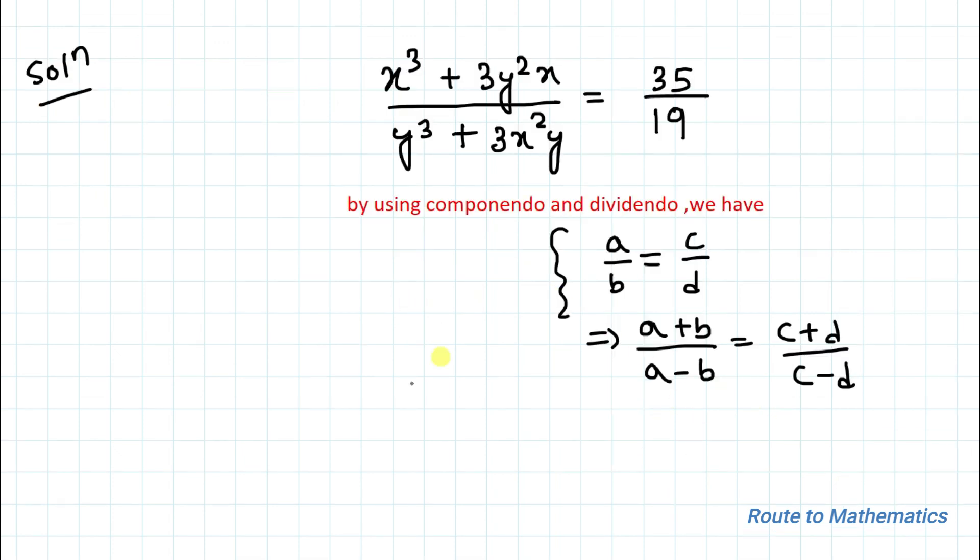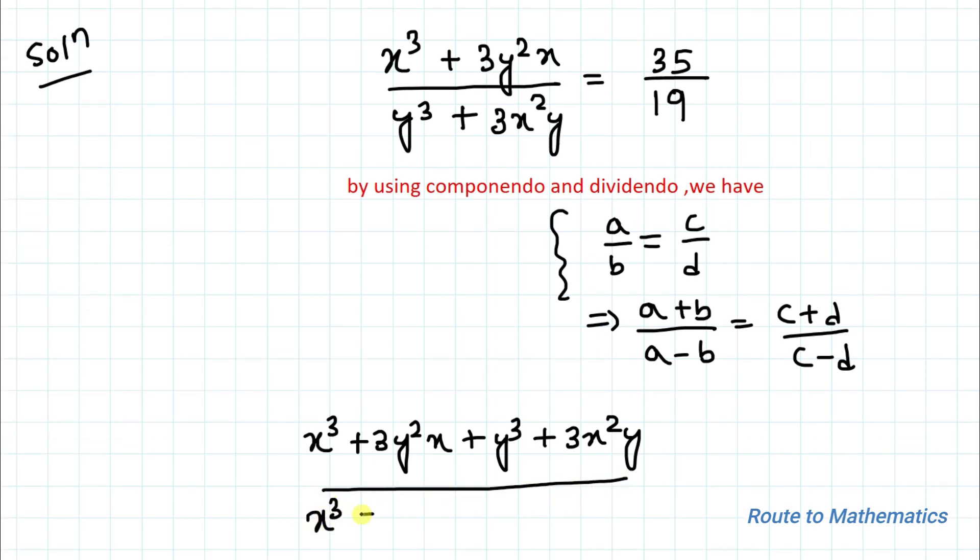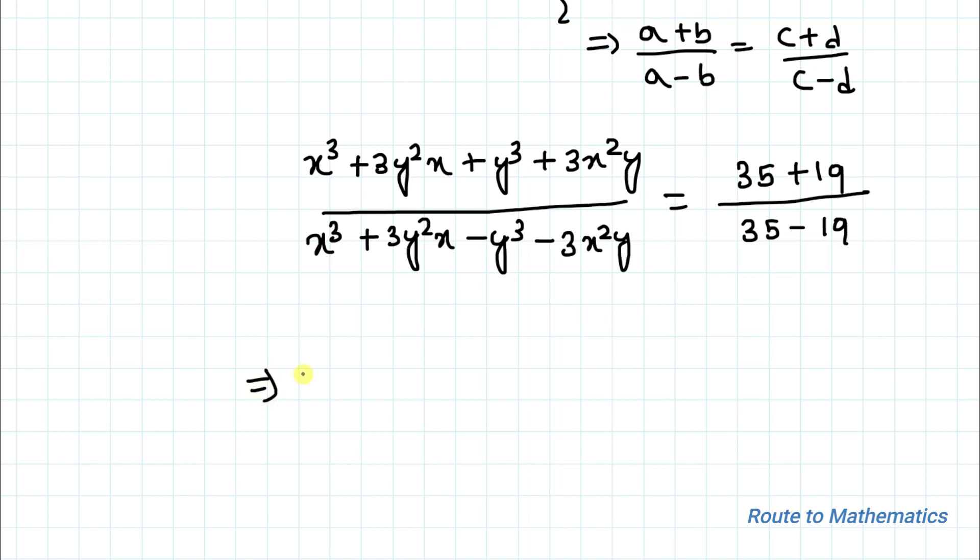Okay, now let's just apply this method here. So our expression becomes (x³ + 3y²x + y³ + 3x²y) divided by (x³ + 3y²x - y³ - 3x²y) equals (35+19)/(35-19).